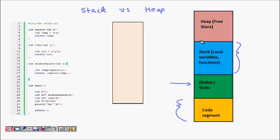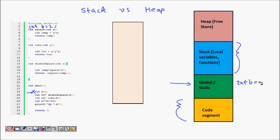Let's try to see how these pieces work together. For example, if we define a global variable int b = 2, it will be stored in the global memory section, not on the stack. So int b = 2 goes into the global memory.